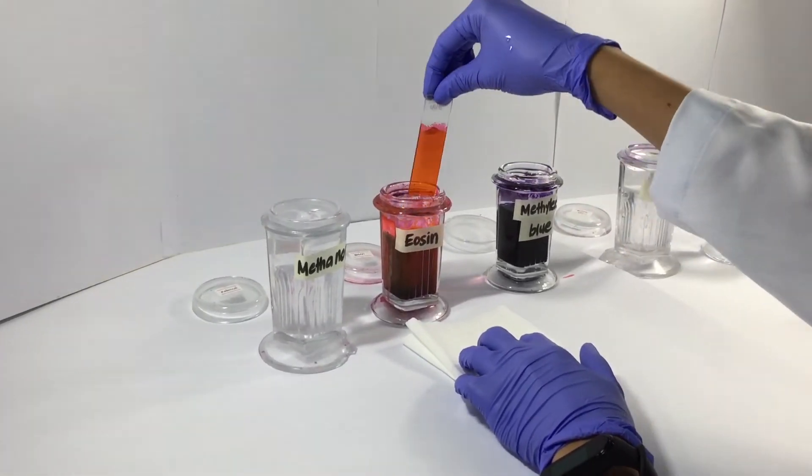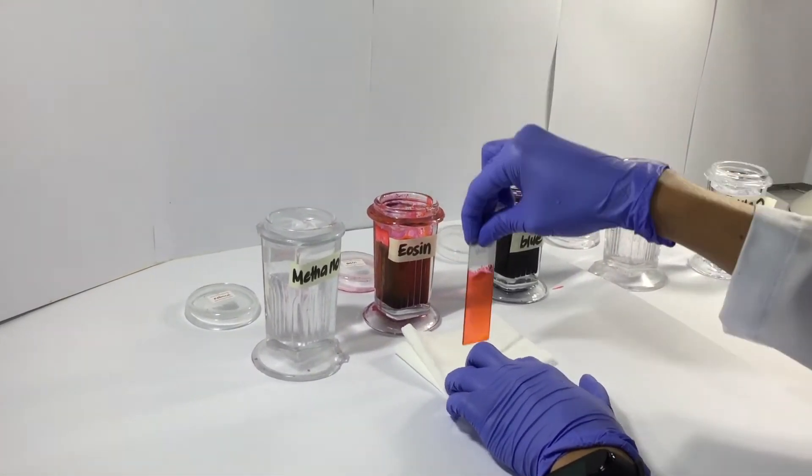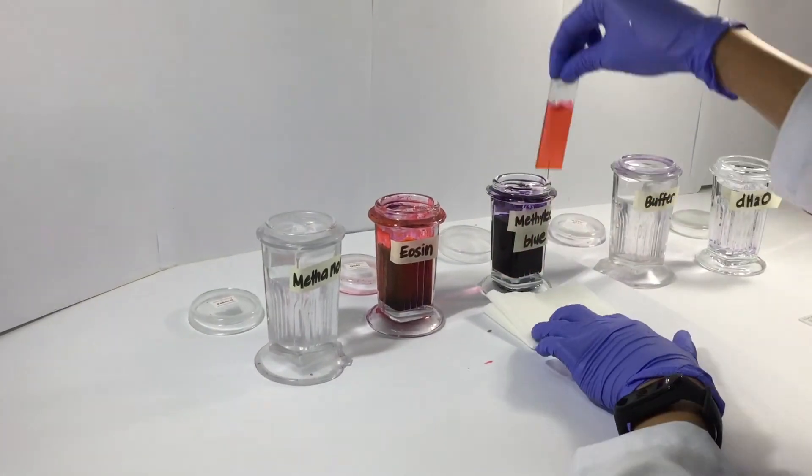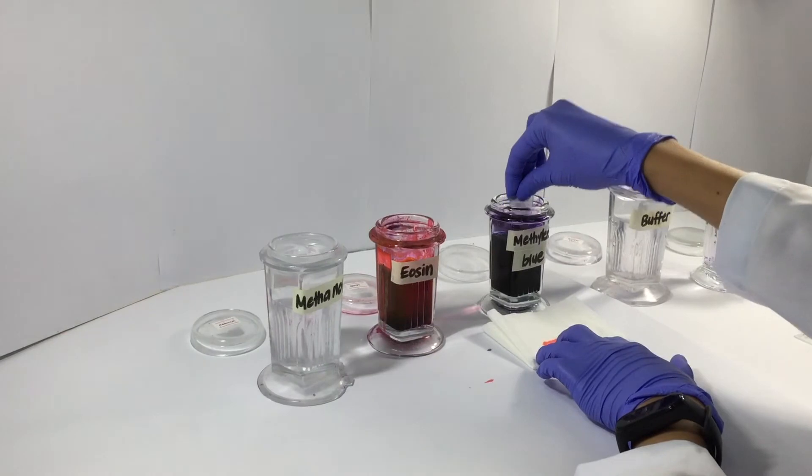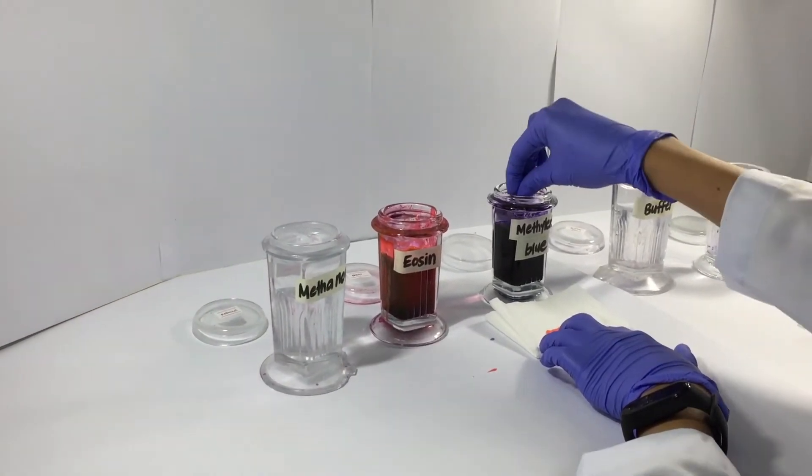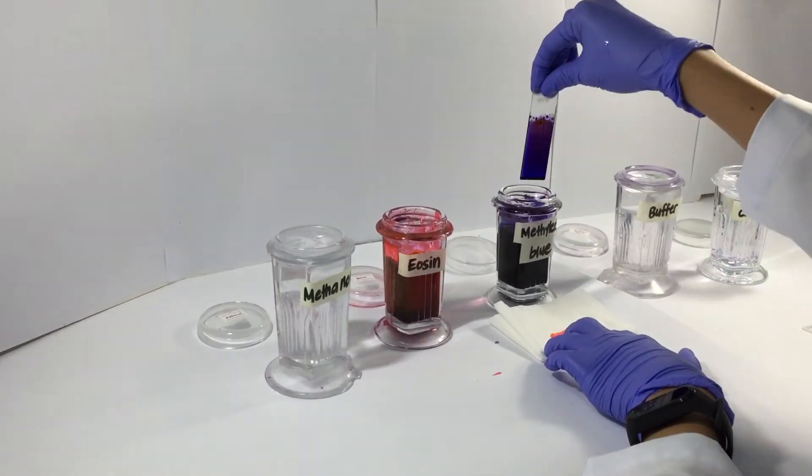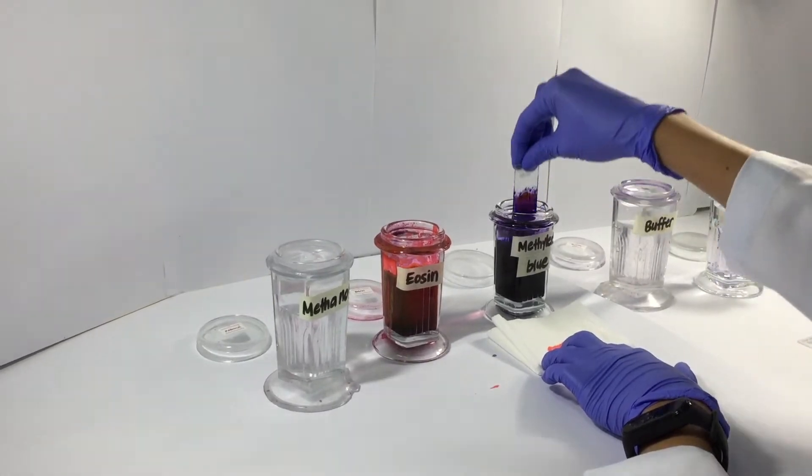Make sure that when you dip it to the next stain, you drain it with a piece of tissue paper to prevent carryover of stains. Dip the fixed slide into the eosin stain for about 6 seconds, then into the second stain, which is the methylene blue for about 4 seconds.